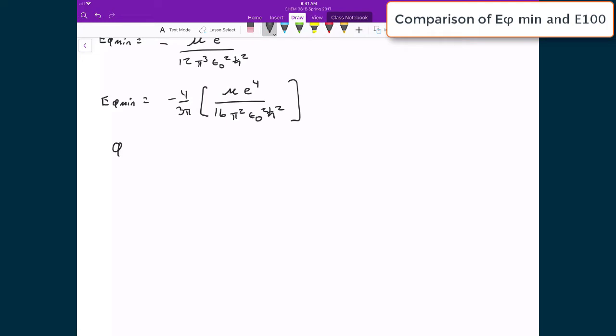So again, here we've got for our minimum energy, we have a trial wave function, which was just equal to e to the negative alpha r squared.